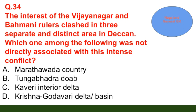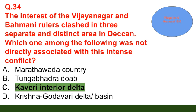Question number 34: The interests of the Vijayanagar and Bahmani rulers clashed in three separate and distinct areas. Which one among the following was not directly associated with this intense conflict? Option A: Marathwada country; option B: Tungabhadra doab; option C: Kaveri interior delta; option D: Krishna-Godavari delta or basin. The correct answer is option C — Kaveri interior delta.